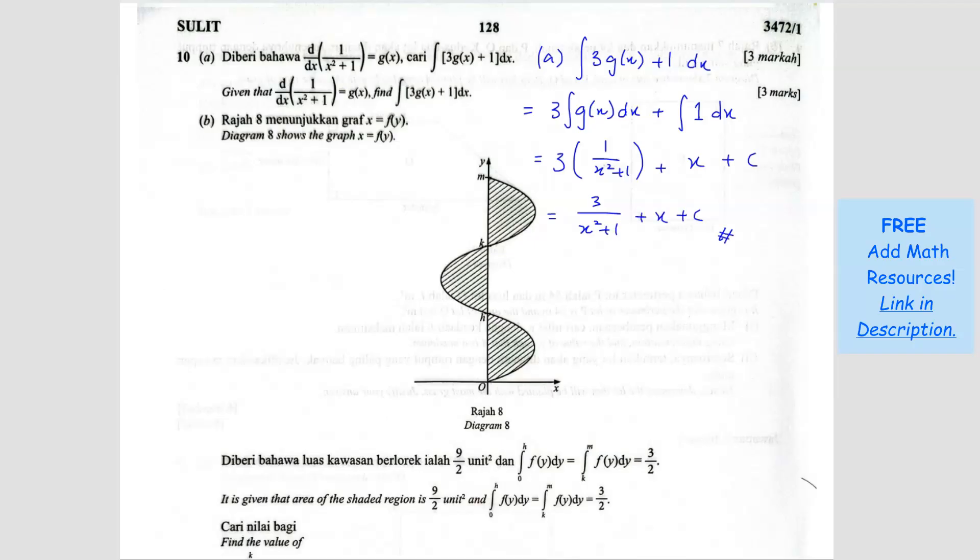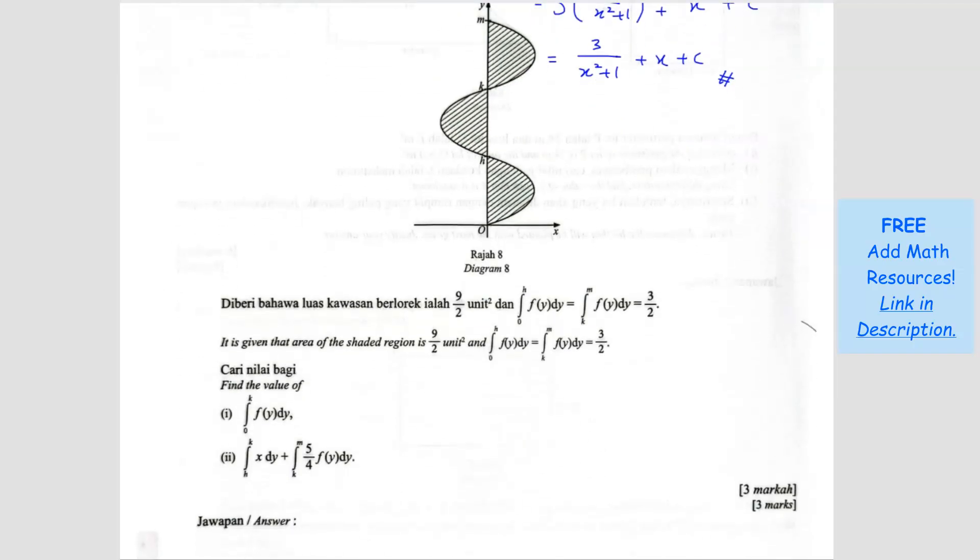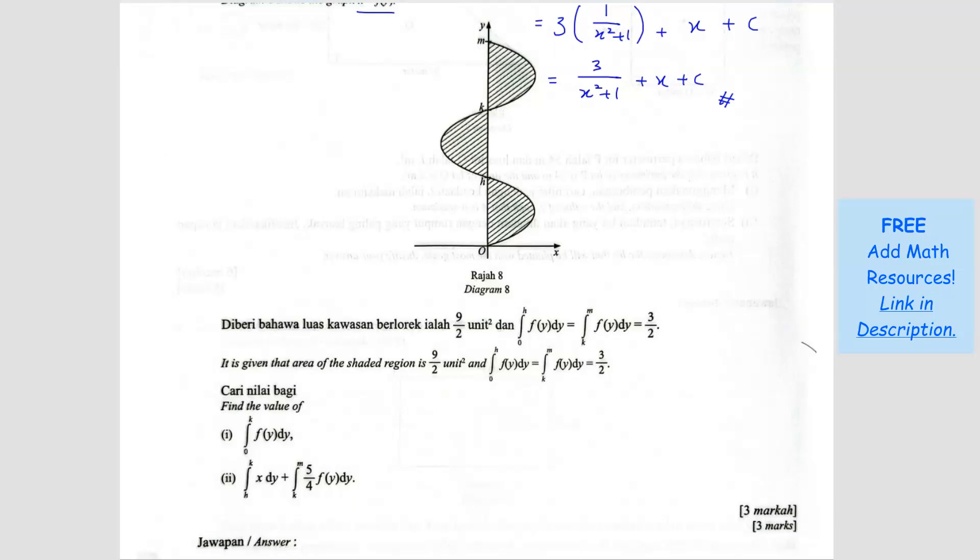So this is your answer. Alright, part b. Diagram 8 shows the graph x equals f(y). It is given that the area of the shaded region is 9 over 2. So 9 over 2 is all 3 of them combined. The integral f(y) dy from 0 to h, this area here, is the same as k to m. Both of them are 3 over 2.